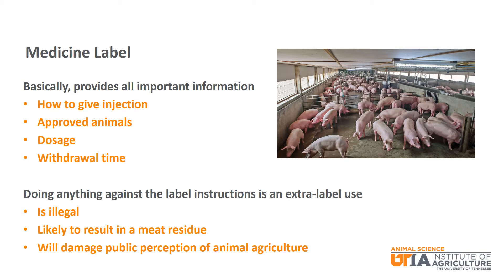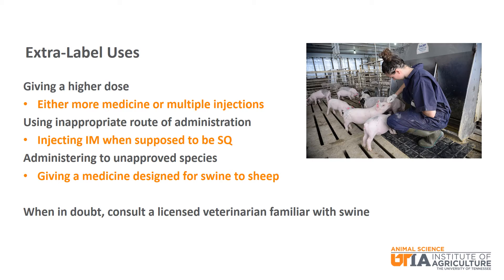This may be the most important thing you hear today: doing anything against the label instructions is called extra-label drug use and is illegal. It is also likely to result in a drug residue in the meat and could damage the public perception of animal agriculture. Specific examples of extra-label uses include giving a higher dose than what is on the label — for example, thinking that if 5 cc's are good, 10 cc's will be better, or giving 5 cc's now and 5 more cc's 3 days later.